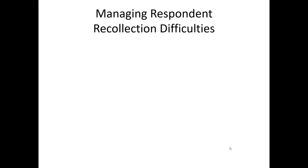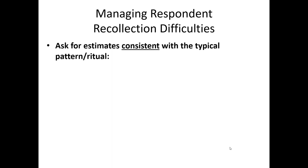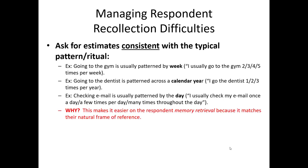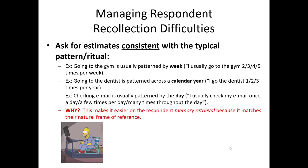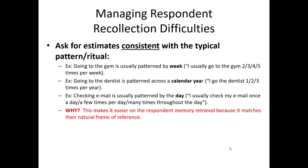Given that it's hard for people to recall how often they engage in particular behaviors, there are a few things we can do to improve their recollection ability. When we ask them how often they do something, it's important to match it up with the typical pattern or ritual. For example, for most people, the idea of going to the gym or working out is patterned within the week. Most people don't describe how often they go to the gym in yearly terms — like 'I go 13 times a year.' So we should ask in that same ritual or pattern.